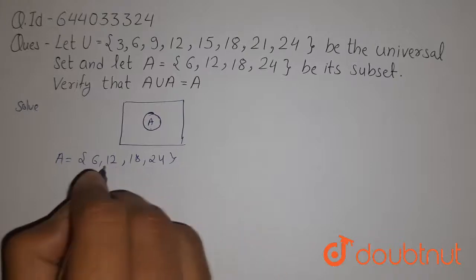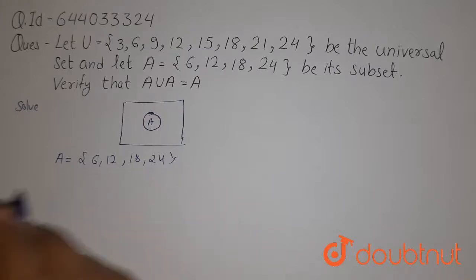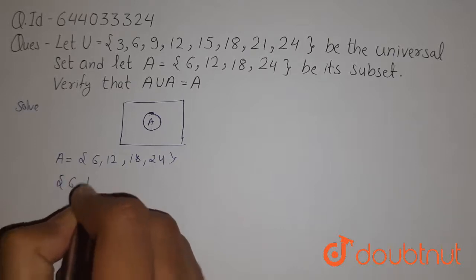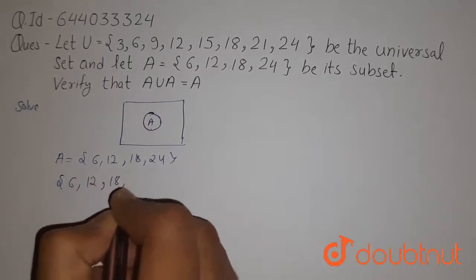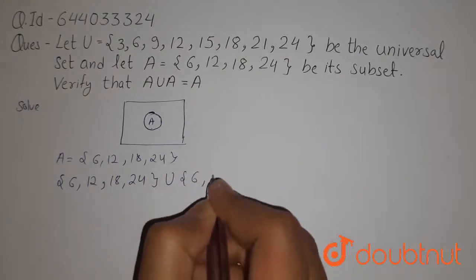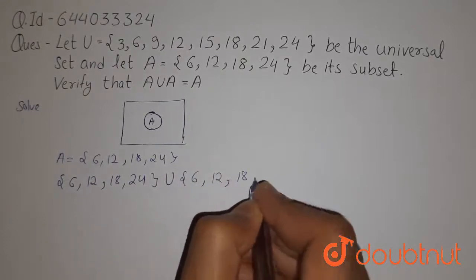So its union with A is itself only. So we can write here 6, 12, 18, 24 union 6, 12, 18, 24.